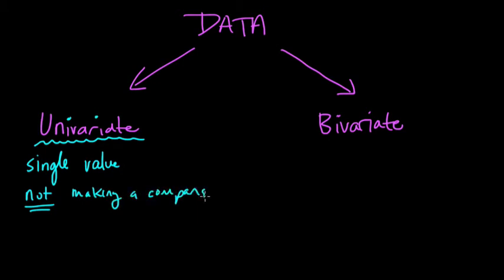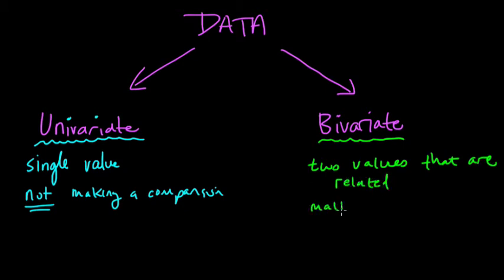Whereas in bivariate data, the opposite is happening here. With bivariate data, we have two values that are related. And we're using those two values to make a comparison. So we're going to make comparisons.